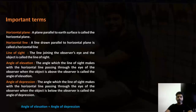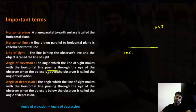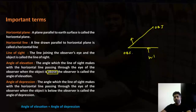Angle of elevation: the angle which the line of sight makes with the horizontal line passing through the observer's eye, when the object is above the observer, is called the angle of elevation. So let's say an object is somewhere up in the sky — it could be the top of a tower, a building, or an aeroplane — and the observer is somewhere on the ground. Draw a horizontal line passing through the observer; then the line of sight joins the observer and the object. The angle between the line of sight and the horizontal line passing through the observer is the angle of elevation.